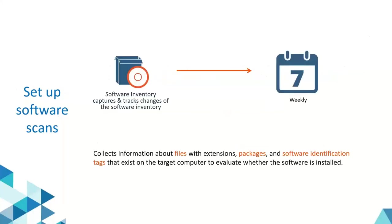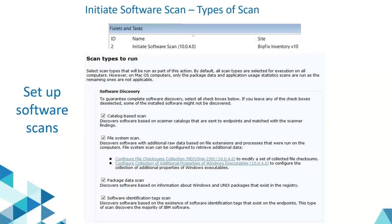Let's discuss setting up software scans. A software scan collects information about the executable files, packages, and SWID tags available on your machines to discover which software is installed. The default schedule is weekly. You can initiate a software scan using the fixlet 'Initiate Software Scan', which has subtypes of scans you can see on the screen — you can select the type based on your requirement.